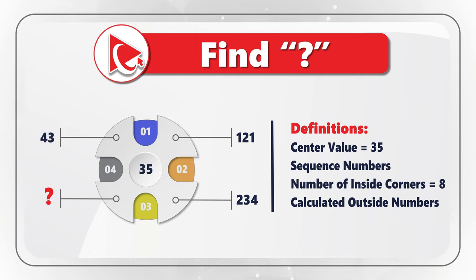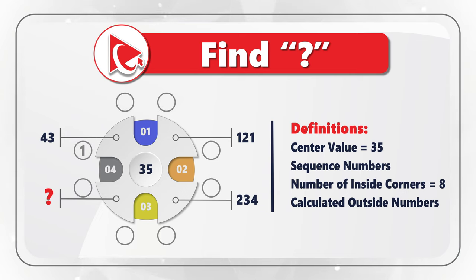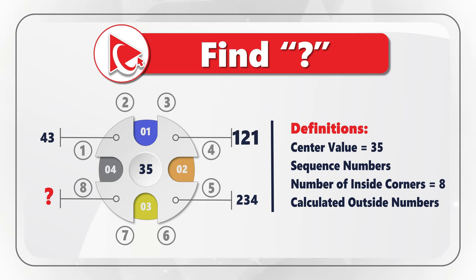To solve this challenge, let's first define the objects that build this shape. We have a center value which equals 35. Then we have sequence numbers: 1 starting at 12 o'clock, 2 at 3 o'clock, 3 at 6 o'clock, and 4 at 9 o'clock. Then we have inside corners — there are 8 of them — used as a constant in calculations. And then there are outside numbers: the first is 43 at 10 o'clock, then 121, then 234, and then comes the missing number.